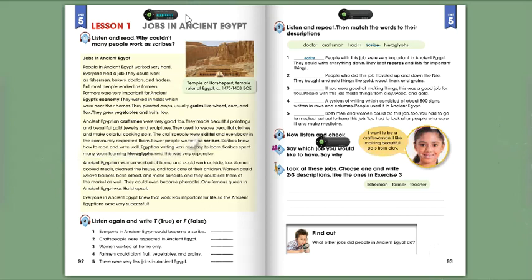Ancient Egyptian craftsmen were very good too. They made beautiful paintings and beautiful gold jewelry and sculptures. They used to weave beautiful clothes and make colorful cooking pots. The craftspeople were skillful, and everybody in the community respected them.